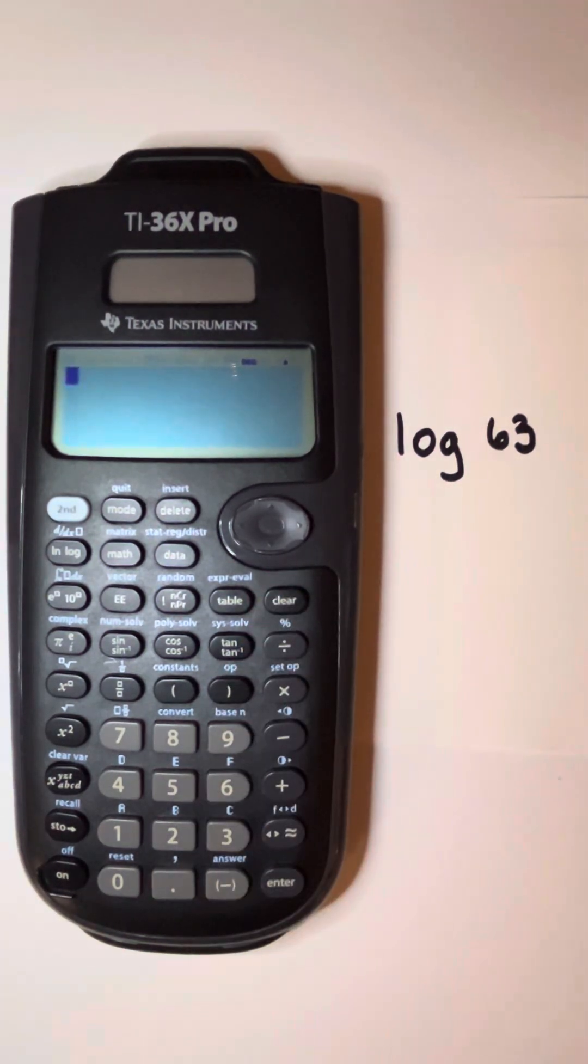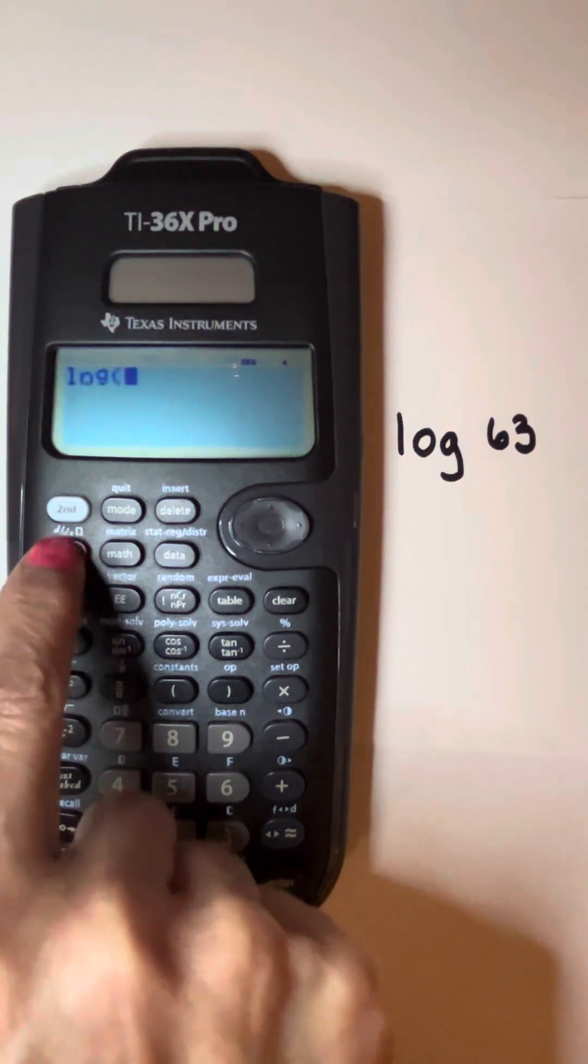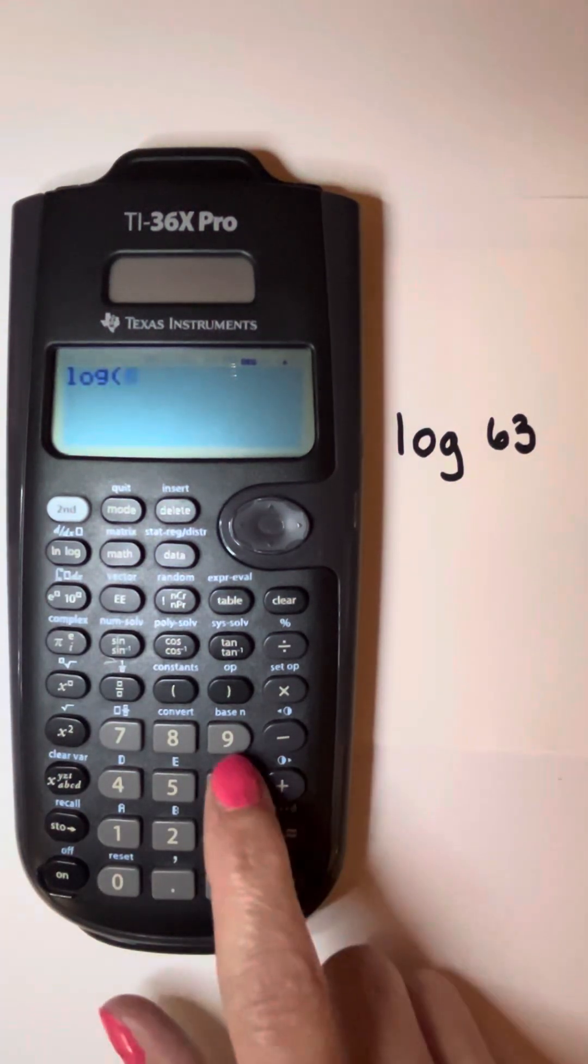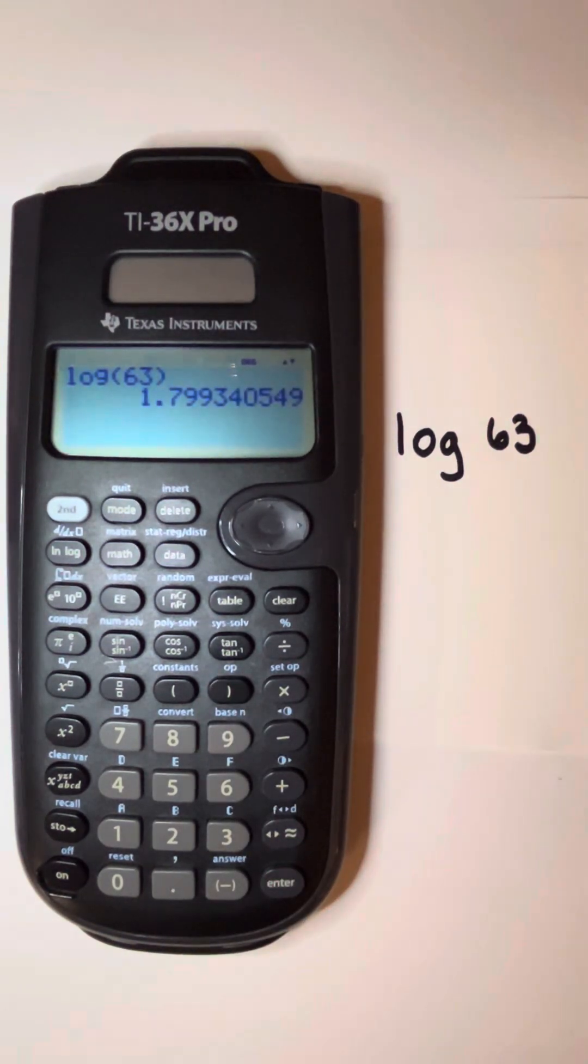So on that same button, the same key on the TI-36X Pro calculator, if we press that button twice, we get to log. That's the common log. So again, I can just put in 63, close or not close the parenthesis, and hit enter, and that gives me the log of 63.